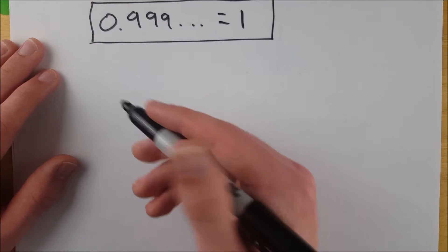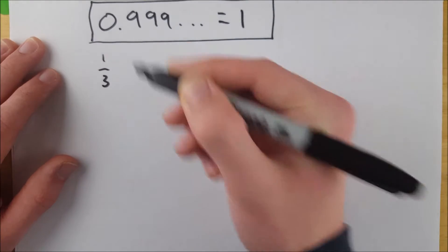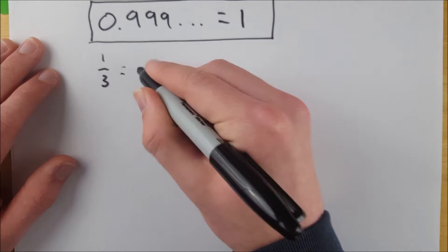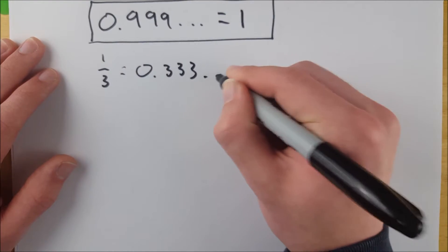Now, the first explanation is really quick, real easy. I imagine most people accept this, that one-third is equal to 0.333 repeating on forever.